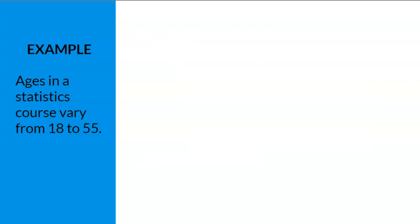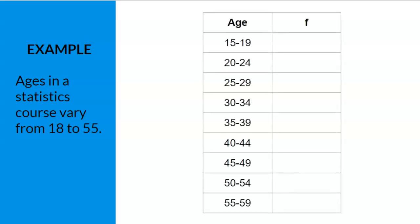Let's review what the final grouped frequency table looks like. The intervals are listed under age, and there need to be enough intervals to cover the entire data set. Since ages varied from 18 to 55, the table needs an interval that includes 55. We need to add one more interval of 55 to 59 to include 55. The total number of intervals in this table is 9, which is more than the 8 we predicted in step 2. This is totally fine — we always need to make sure the data set is accurately represented, even if we need to add one more interval.